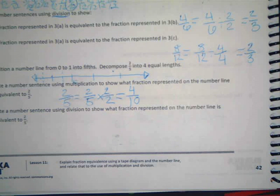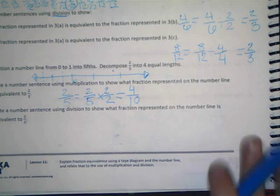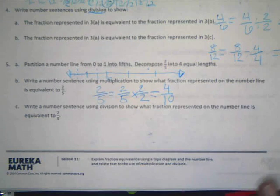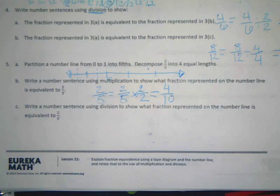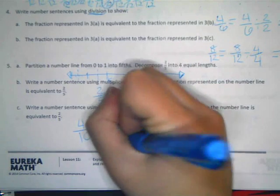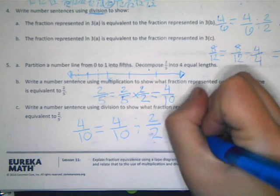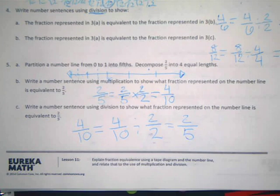Alright, C. Write a number sentence using division to show what fraction represented on the number line is equivalent to two fifths. So we're kind of doing this one backwards. We want to show how four tenths is equal to two fifths using division. So how would I start that one off? Tyler? Whoa, awesome. Do you guys agree with that? Yes. Great. Thank you.